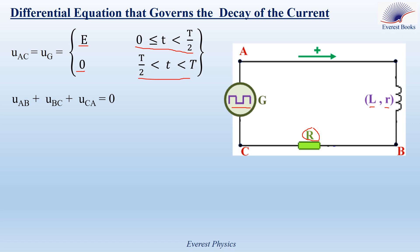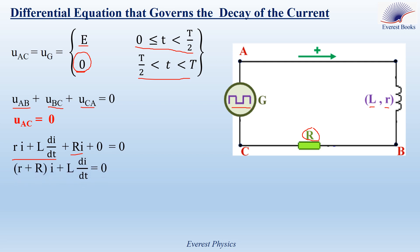During the decay of the current, the voltage provided by the function generator is 0, so uCA = 0 and uAC = 0. Now, uAB is the voltage across the coil; following the positive sense, the voltage across the coil is rI + L·di/dt. And uBC is the voltage across the resistor; following the positive sense, the expression of the voltage across the resistor is +RI.